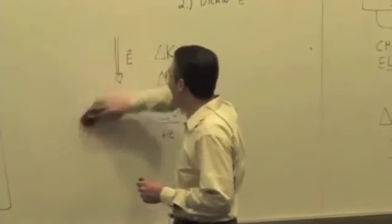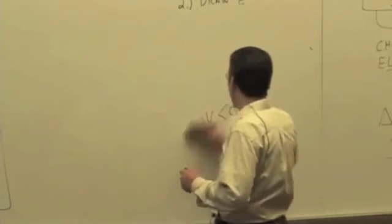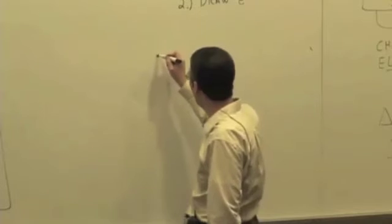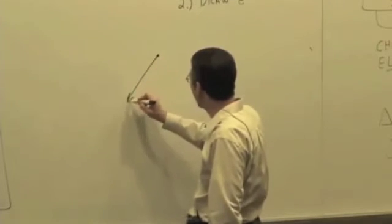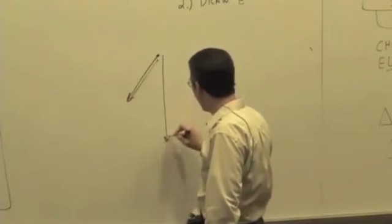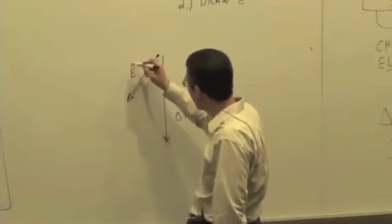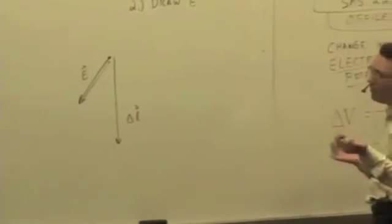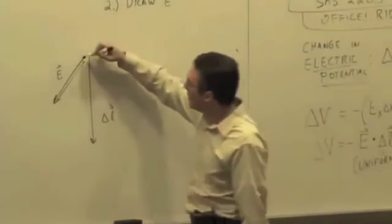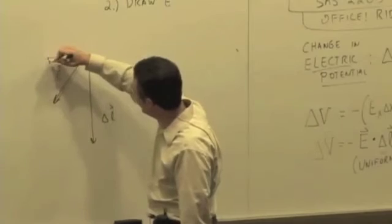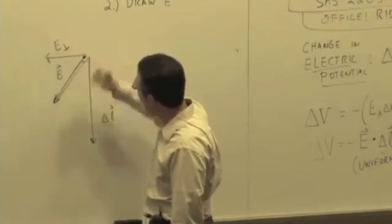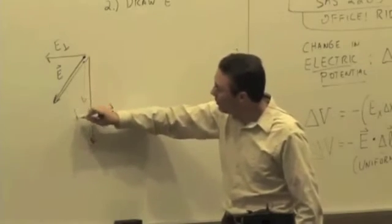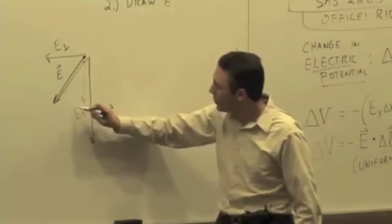Like we saw in this last case, what if we don't have a situation where the field is parallel, anti-parallel, or perpendicular? If the field was like this and the path was down, you can still check the direction because you can always break up the field into components. There's a component of the field that's perpendicular to the path and there's a component of the field that's parallel or anti-parallel depending on the direction to the path.